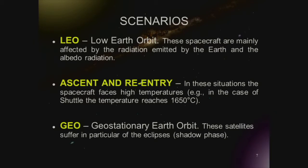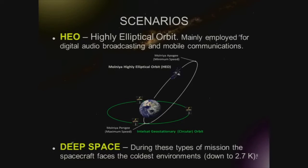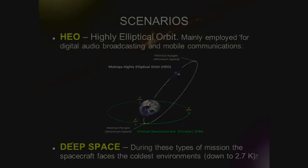Some kinds of scenarios: LEO orbits are the closest to the Earth. Re-entry is the hardest and hottest part of the mission. GEO suffers the shadow phase from our planet. There are also very eccentric missions for broadcasting communication, and deep space missions, which are the coldest missions.